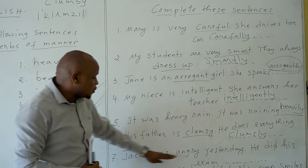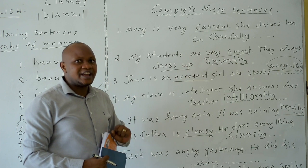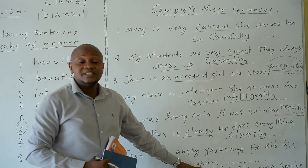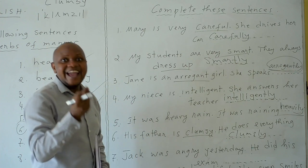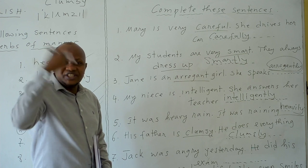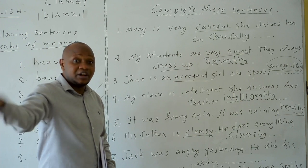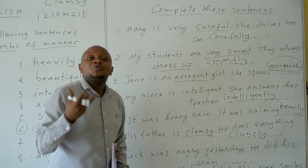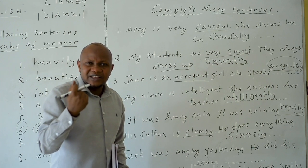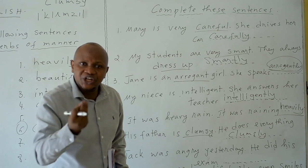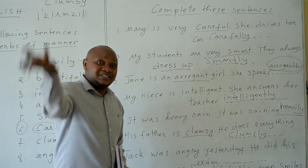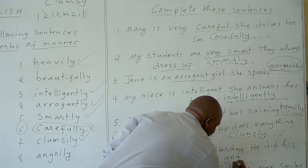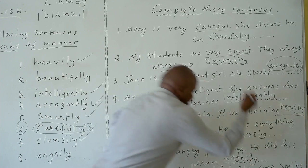Number seven: 'Jack was angry yesterday. He did his exam angrily.' Jack was angry, so he did his exam angrily. How did Jack do his exam? He did his exam angrily.